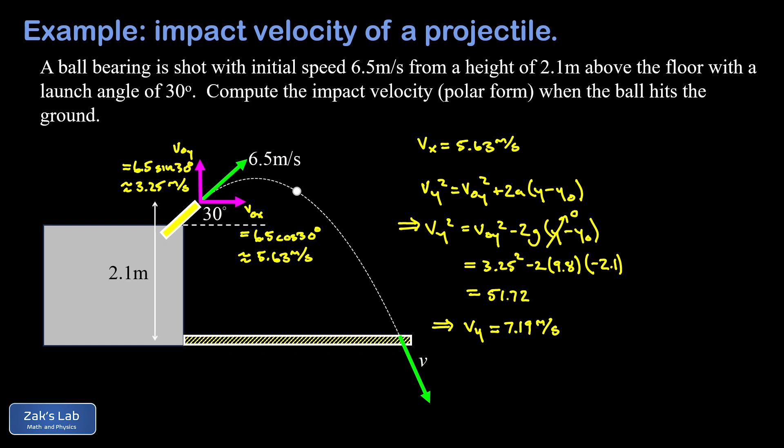Now that we have these two velocity components we can just draw a triangle showing those velocity components adding head to tail, and then we'll get the hypotenuse. That's going to be the speed and we'll label an angle. There's our diagram and we have the final rightward x velocity component of about 5.63 meters per second and then our final downward y velocity component with a magnitude of 7.19 meters per second.